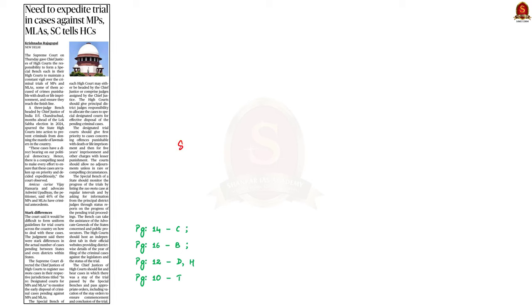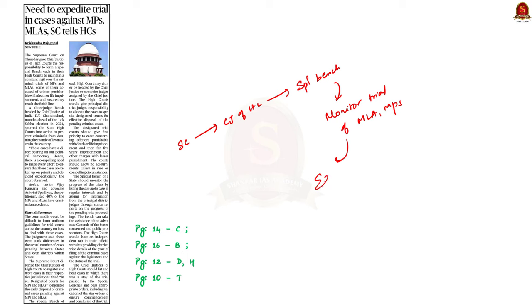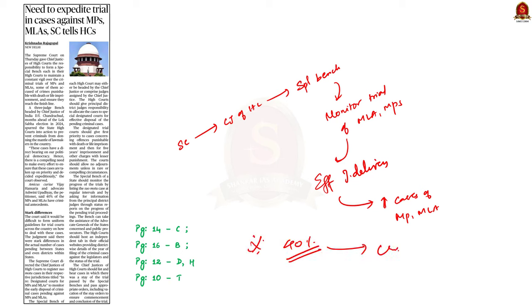Take a look at this news article. Yesterday, the Supreme Court directed the chief justices of all high courts to form a special bench in their respective high courts. The purpose of the special bench is to monitor the criminal trials of people's representatives — that is, MPs and MLAs — to ensure that justice is delivered. This step has been taken by the judiciary to expedite the disposal of cases against MPs and MLAs. As per this news article, nearly 40% of MPs and MLAs have criminal backgrounds.